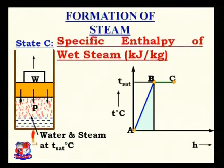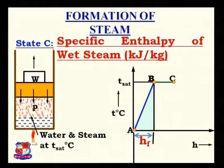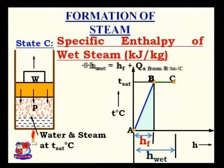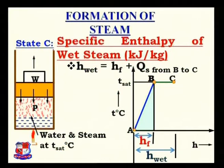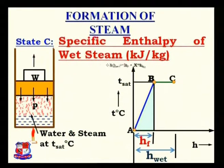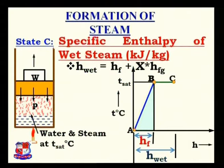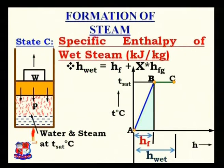Specific enthalpy of wet steam, in units of kJ/kg: the enthalpy required from A to B is hf, and from A to C is the enthalpy of wet steam. Therefore, the enthalpy of wet steam equals hf plus the heat supplied from B to C, which is taken as x × hfg, where x is the dryness fraction and hfg is the enthalpy of evaporation, also known as the latent heat.